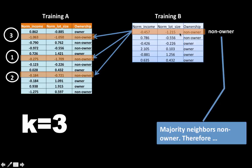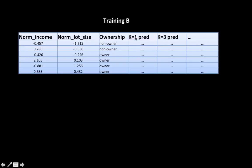This illustrates one calculation. For every case in the Training B partition, we repeat this process to find predictions. The actual values come from historical data, and we find predictions based on k equals 3. We repeat this for k equals 1, 3, 5, 7, and 9 — finding predictions for every single case under each value of k.